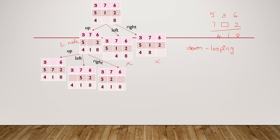Let us see which is the most promising move — which will lead to the goal state fastest. For the first candidate, in the second row I have 7 and 2, which matches the goal, but there is an extra 5. For the second candidate, I have only 5 and 2, with no 7. Similarly the third candidate also lacks 7 in that row. Comparatively, moving along the first path has better promise of reaching the goal faster, so I will expand only that node.